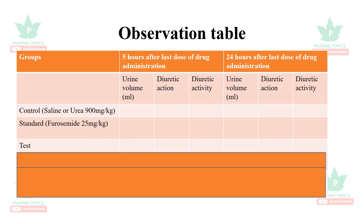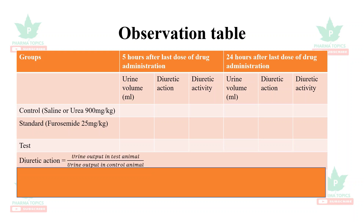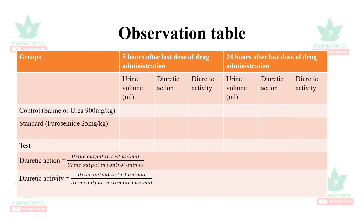There is a distinction: diuretic action uses the Lipschitz formula — urine output in the test animal divided by urine output in the control animal. Diuretic activity is the urine output of the test animal divided by urine output in the standard animal, for example furosemide. A value greater than 1 indicates diuretic activity, and greater than 2 indicates potent diuretic activity.